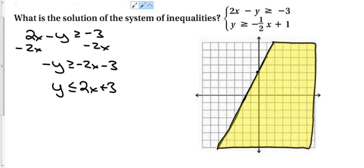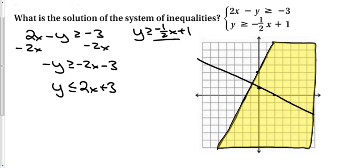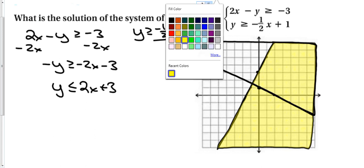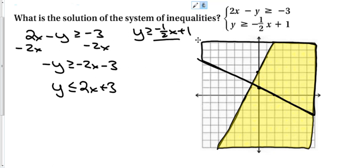Now for the second equation: y ≥ -½x + 1. Luckily this is already in slope-intercept form. We put a dot at 1 on the y-axis, and the slope is -½ — down one, right two. It's a solid line because it's 'or equal to.' Since it's a greater-than inequality, we shade above the line. I'll fill that region in blue.